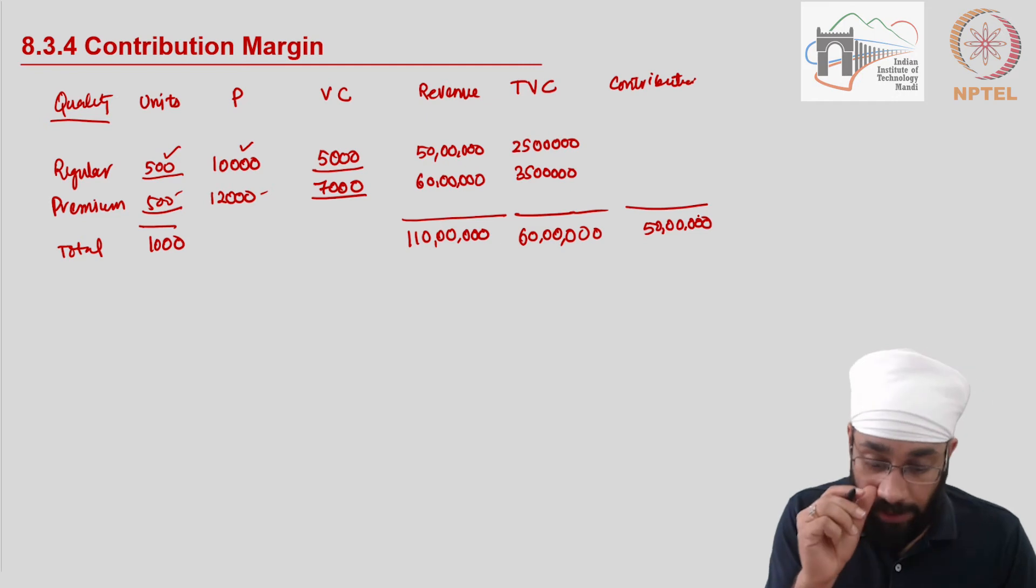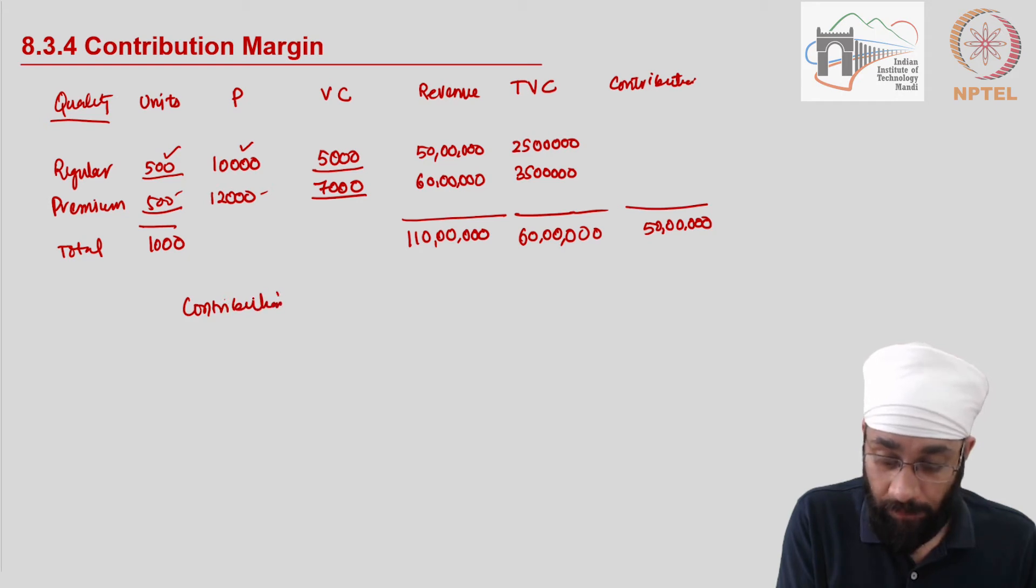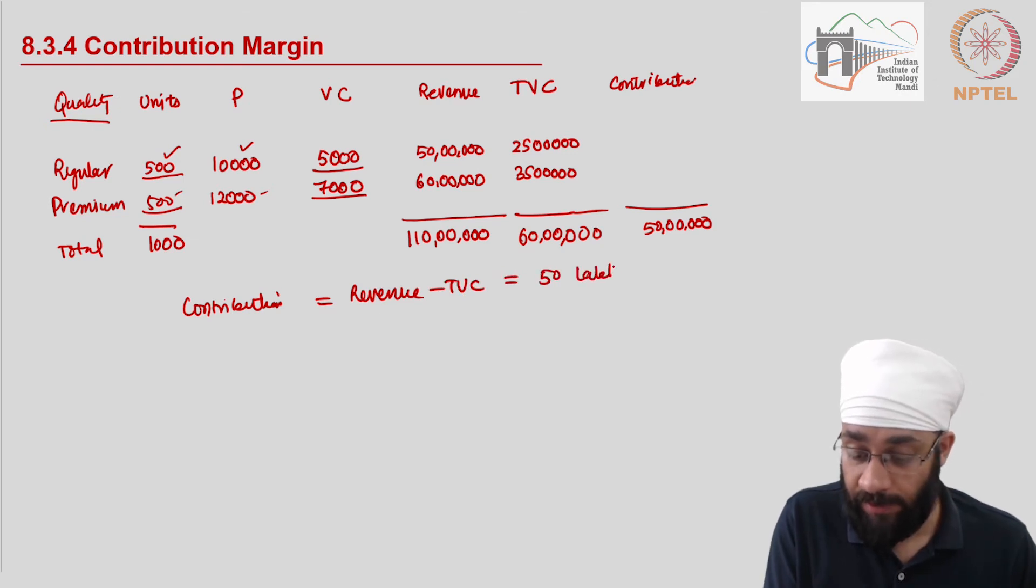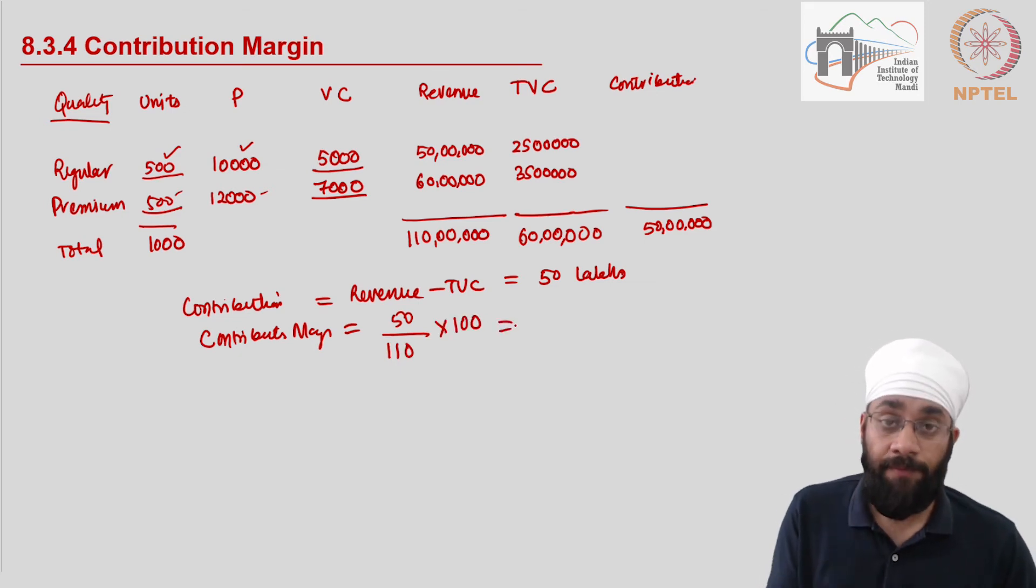Now the contribution therefore is 50 lakhs. This is the contribution that we have at the top of the revenue. So the contribution, which is equal to the sales minus total variable cost, comes out to be 50 lakhs. Now the contribution margin. Contribution margin is equal to the contribution, which is 50 lakhs, divided by the total revenue, which is 110, multiplied by 100. That's how you calculate the contribution margin.